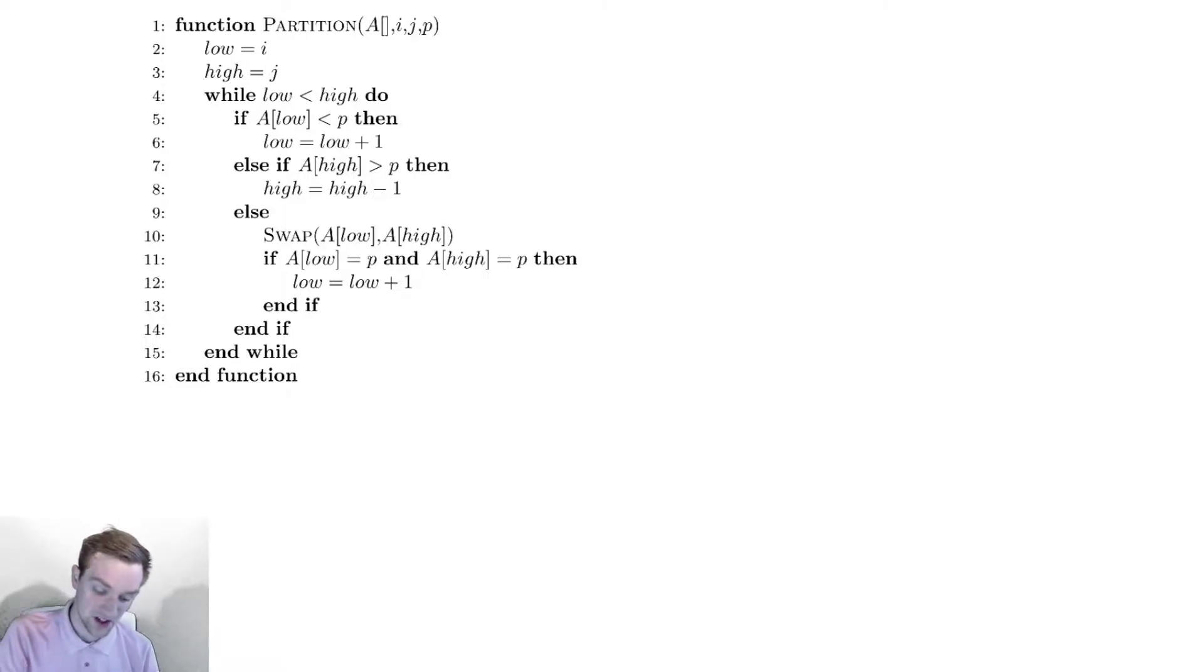This method works by taking an array, or at least a section of an array from i to j. Its goal is to rearrange the elements such that all elements on one side of the array are less than a pivot point, and all elements on the other side are greater than the pivot point.